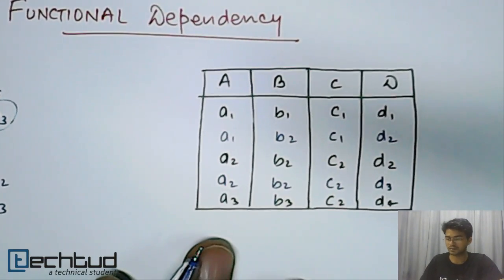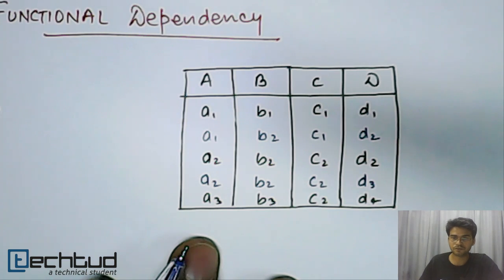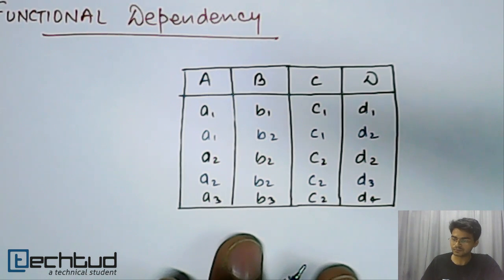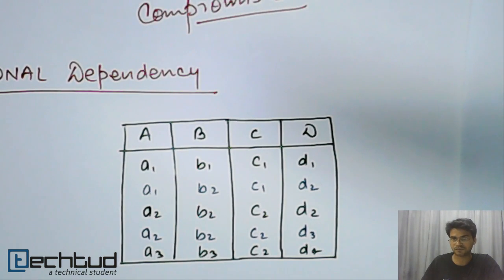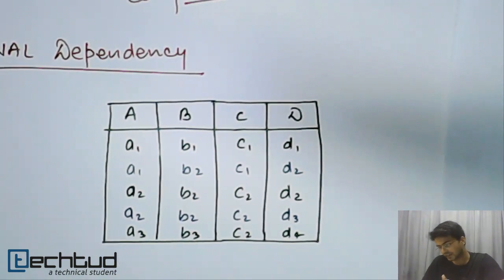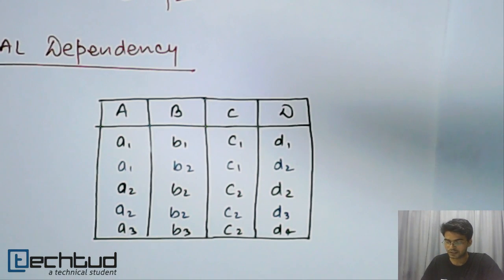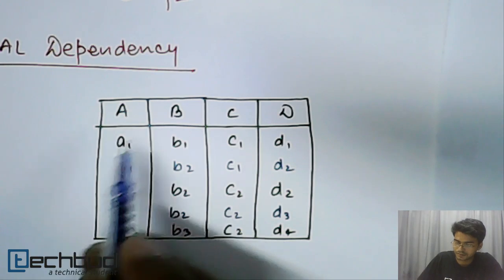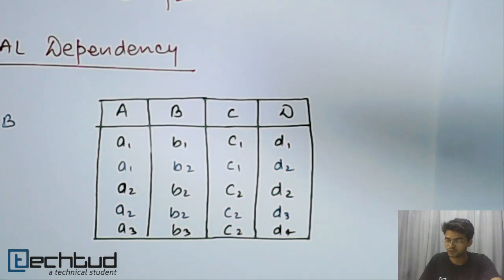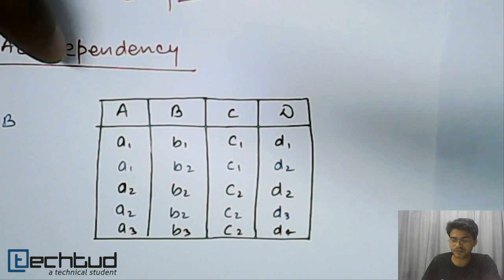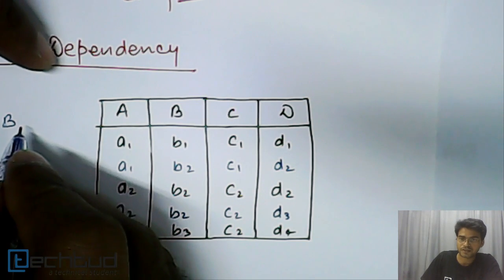Now here we have a table and we will try to identify what are the functional dependencies for this table. How do we go about solving these kind of problems? Let's randomly think about A determines B.